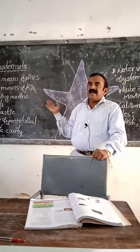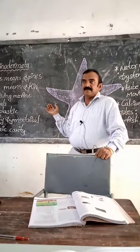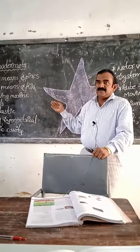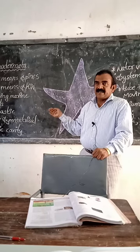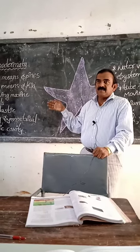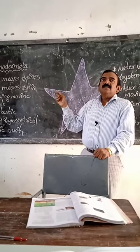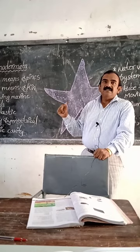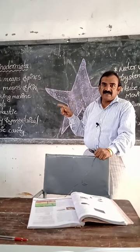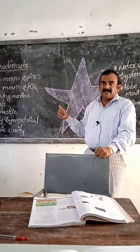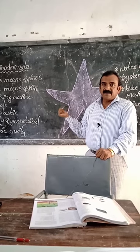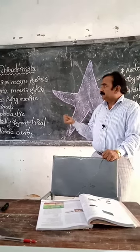The skin is made up of calcium phosphate. All these are the features of Echinodermata. Examples of Echinodermata are starfish and sea urchin. Thank you.